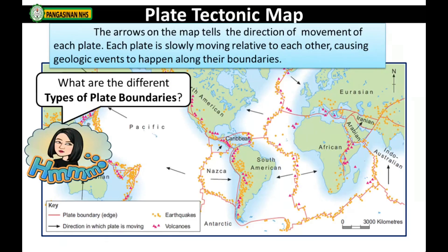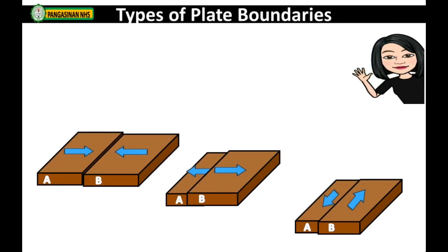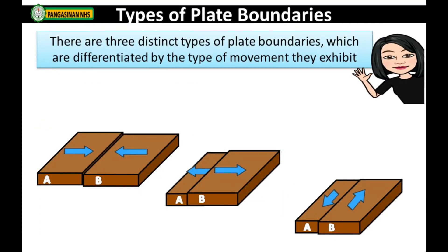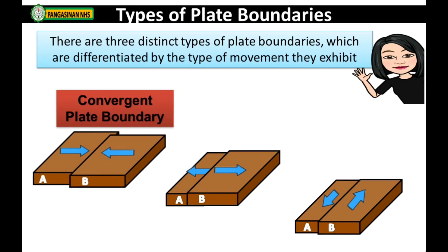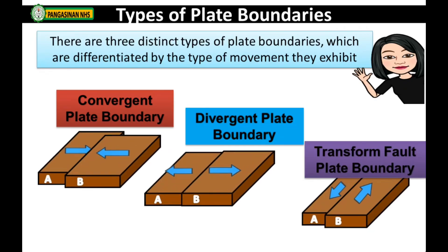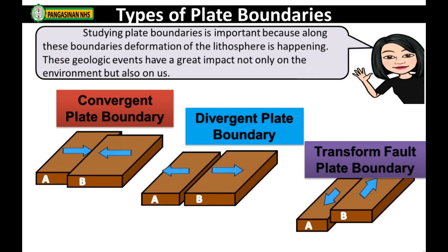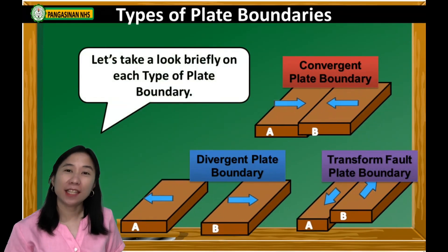What are the different types of plate boundaries, and what geologic events could be formed by them? There are three distinct types of plate boundaries, differentiated by the type of movement they exhibit: convergent plate boundary, divergent plate boundary, and transform fault plate boundary. Studying plate boundaries is important because deformation of the lithosphere occurs along them, and these geologic events have a great impact on both the environment and on us.